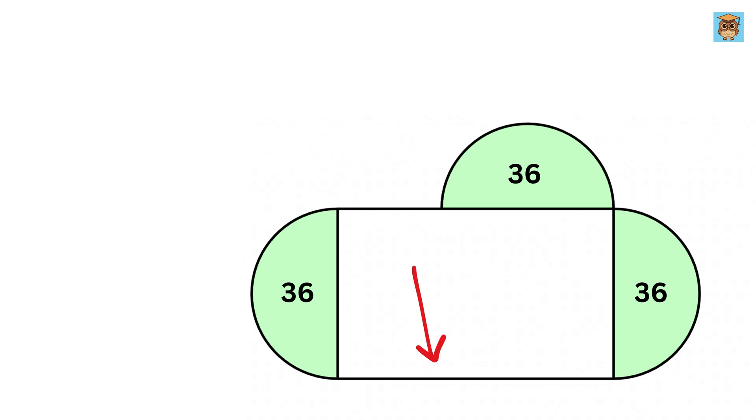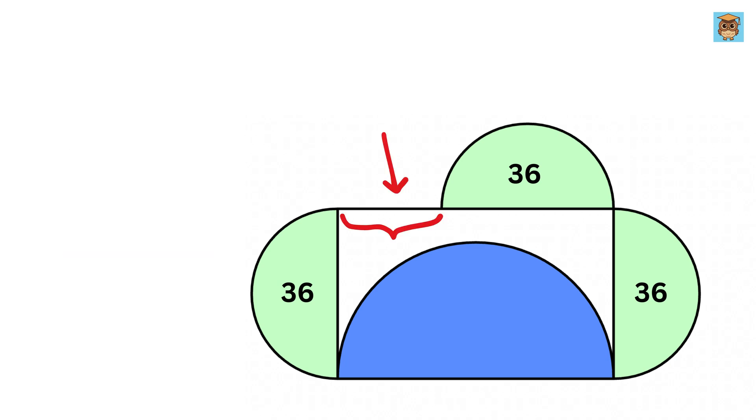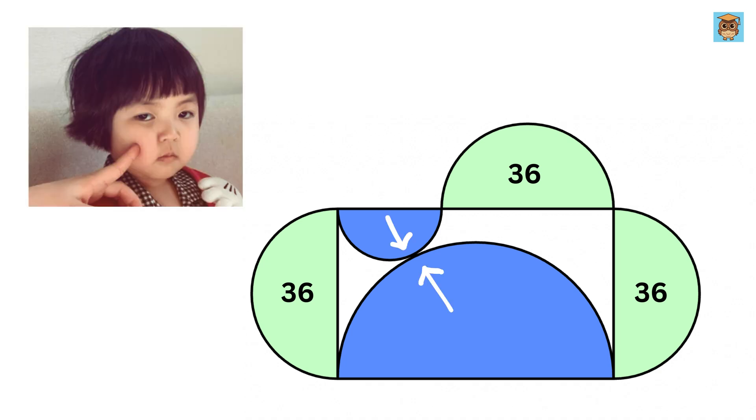Now, using this side of the rectangle as a diameter, we draw a semicircle like this. Then, using this piece as a diameter, we draw another semicircle like this, and the dimensions of the rectangle are such that both these semicircles are externally touching each other.